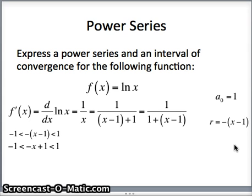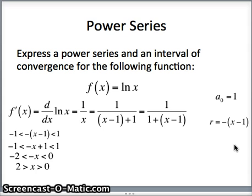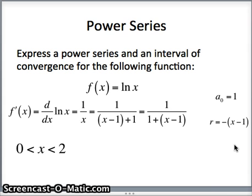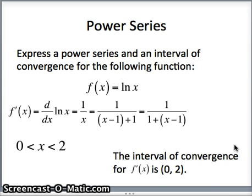Doing some algebra: negative 1 less than negative x plus 1 less than 1. Subtracting one from both sides gives negative 2 less than negative x less than 0. Multiplying both sides by negative 1 and switching the signs gives us 2 greater than x greater than 0. So the interval of convergence for f prime is 0 less than x less than 2. But we're not finished — we want the interval of convergence for f as well as the power series representation for f. Both will be reflected in our work for finding the power series and interval of convergence for f.